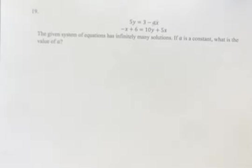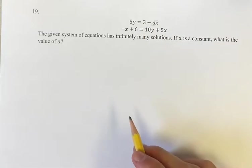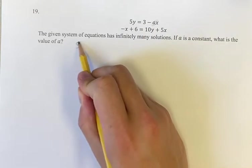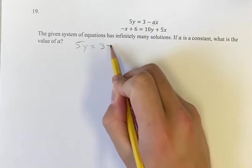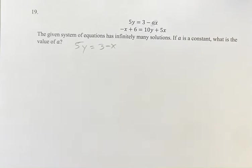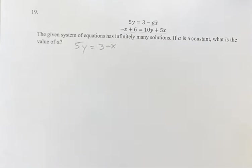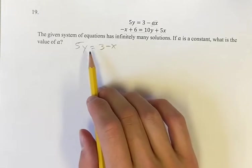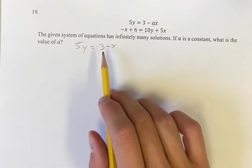Well, the first thing we can do here is get both equations in the same form. So we have 5y is equal to 3 minus ax — keep that the same. And then we want to get this equation down here in the same order. We'll want y on one side, and then the constant plus x.